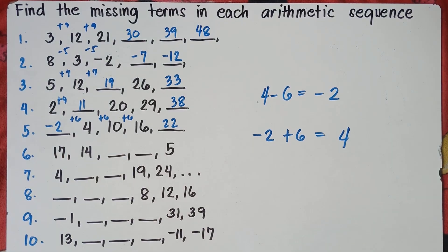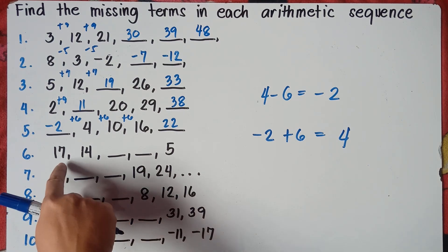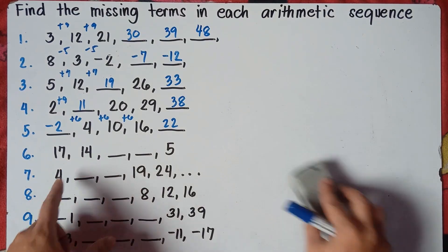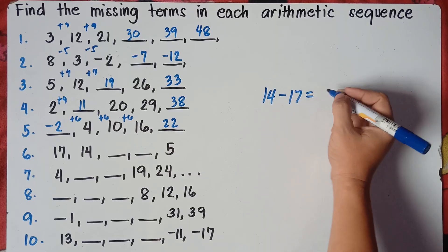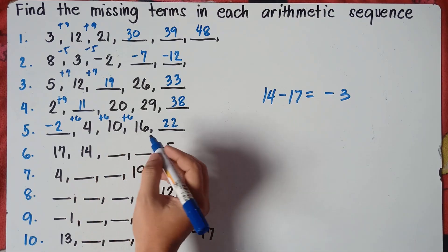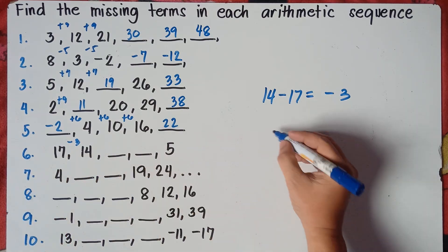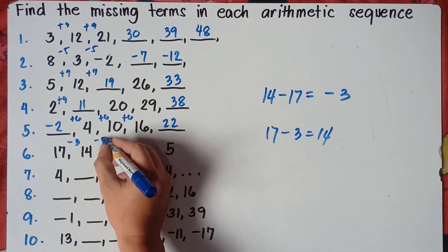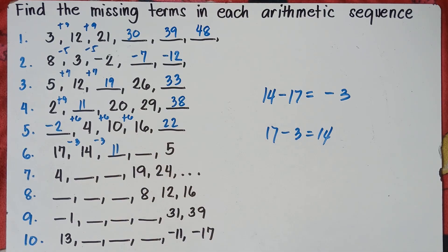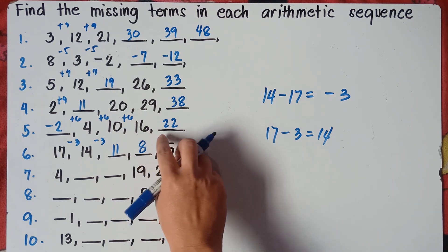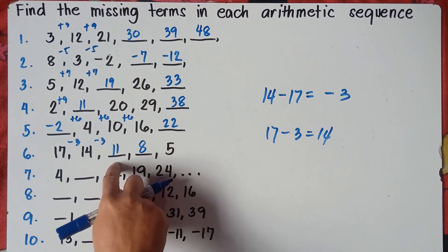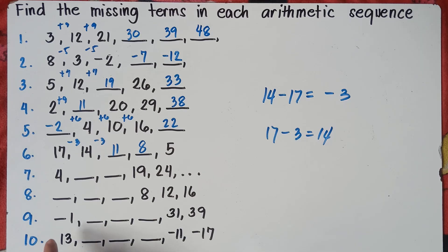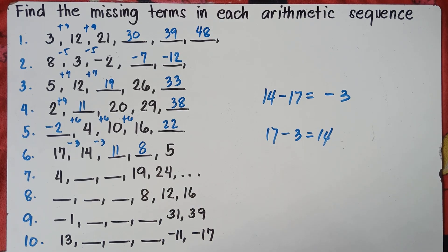Number 6: subtract the second term minus the first term — 14 minus 17 equals negative 3. So the common difference is negative 3. Starting from 17: 17 minus 3 is 14, 14 minus 3 is 11, 11 minus 3 is 8, 8 minus 3 is 5. So the missing terms are 11 and 8. Now you try numbers 8, 9, and 10, and put your answers in the comment section down below so we can check if you really understand the topic.